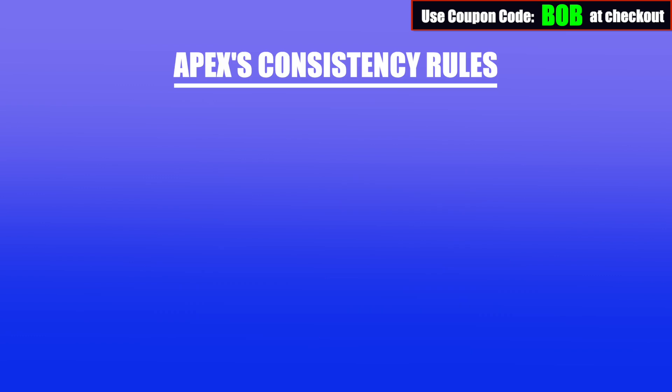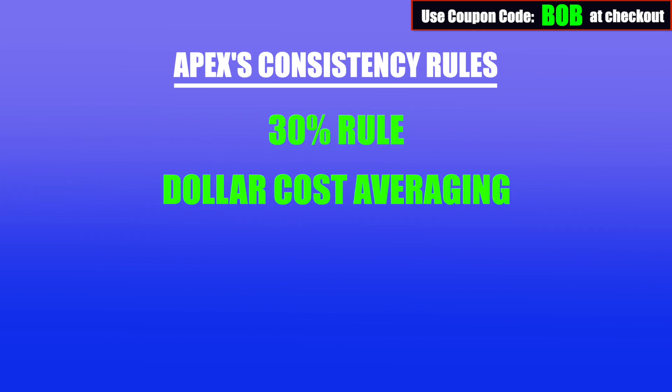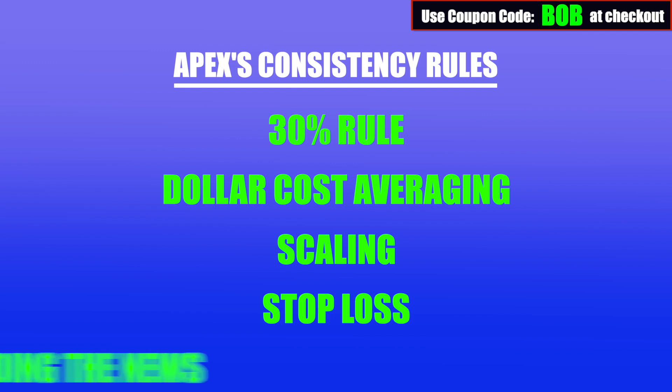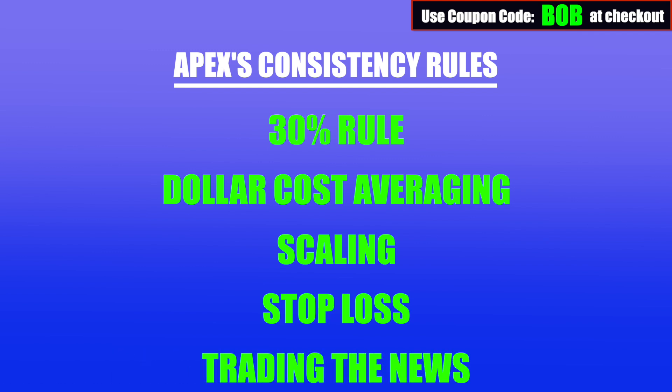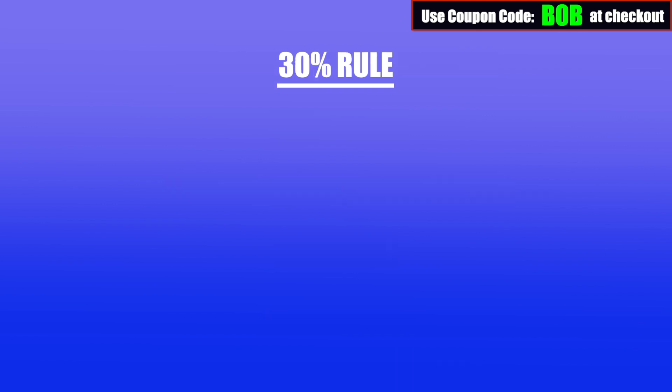So what are these consistency rules? Let's list them out and we'll talk about each of them in depth throughout this video. We're going to talk about the 30% rule, dollar cost averaging, scaling, stop loss, and trading the news. These are essentially the most important and really the only rules you need to know regarding Apex's consistency.